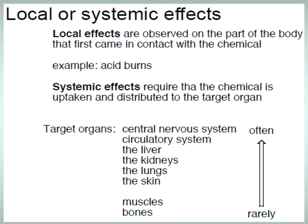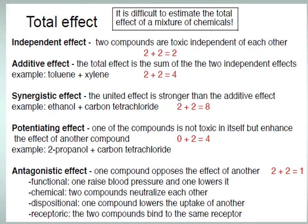Acute domestic poisoning is also common in children as a result of keeping medicines and household toxins in uncontrolled places that can easily fall into the hands of children. When children are left without attention, they may swallow pills, tablets, drugs, and other forms of medicine stored in accessible places containing toxic and violent substances, resulting in acute poisoning. Domestic poisoning also includes alcoholism and drug addiction.